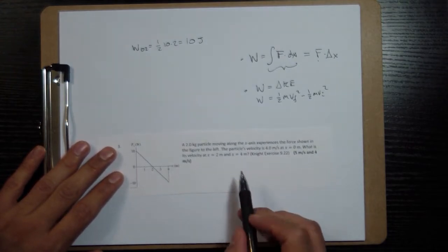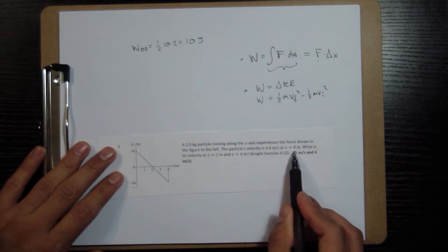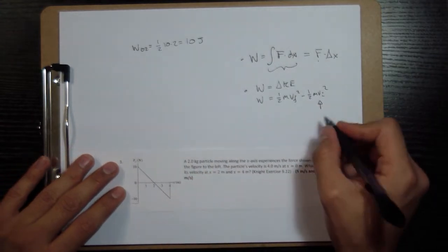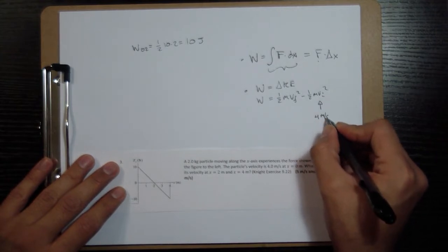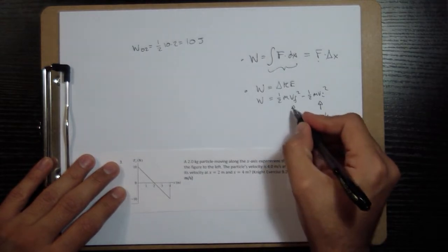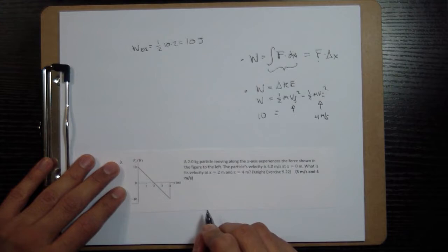And since we know that the particle's velocity is 4 meters per second at x equals 0 when we're starting, we're going to plug in the 4 meters per second into this one and what we want to know is what is this v final and we now know that this is 10 joules for the first problem at least.